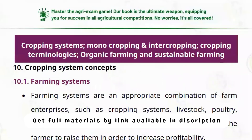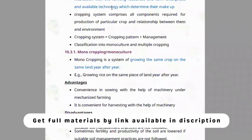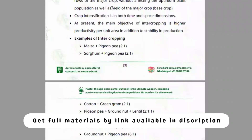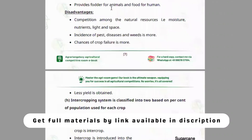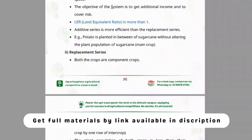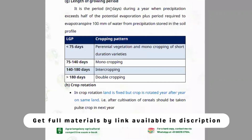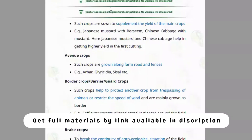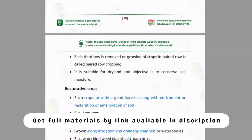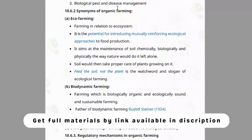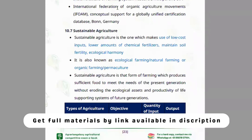Module ten covers cropping systems — the concept of cropping pattern, monocropping, monoculture, and intercropping with its advantages, disadvantages, potential, and types. Also included are additive series, mixed cropping, sequential cropping, relay intercropping, cropping intensity, crop rotation principles, and important concepts like cash crops, cleaning crops, cover crops, and mulch crops. Organic farming, fully organic areas, research institutes, and sustainable agriculture are also explained.